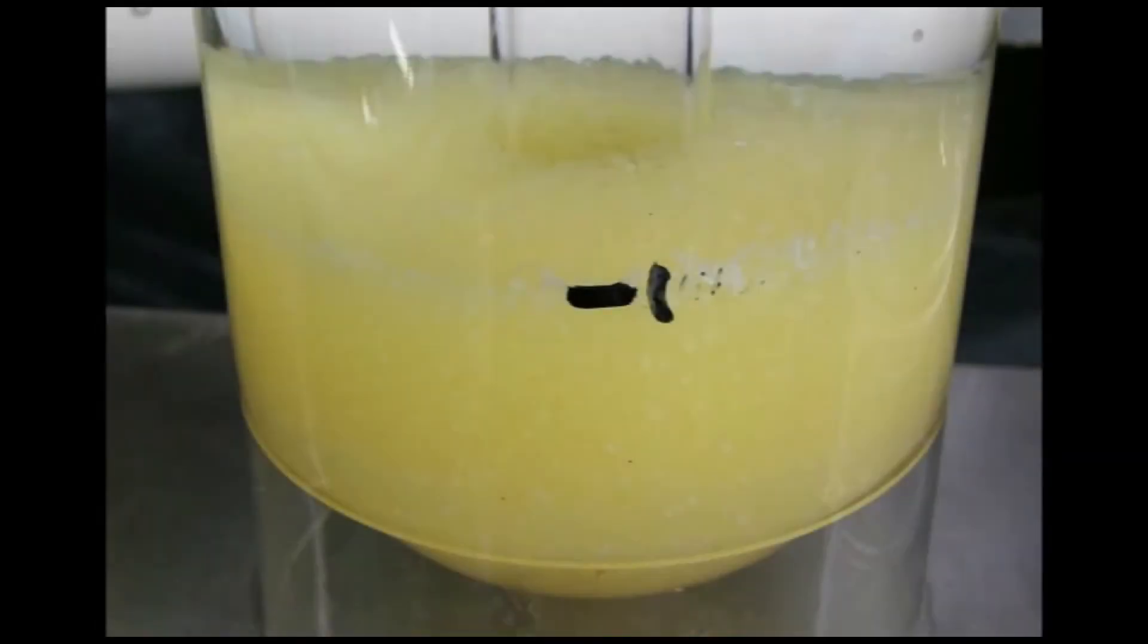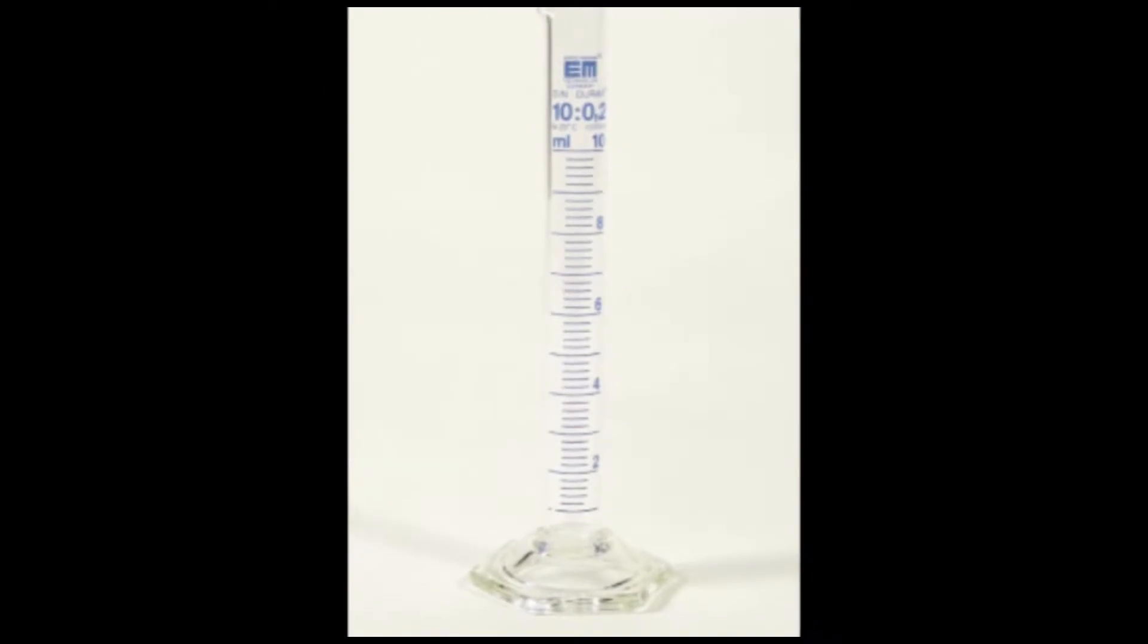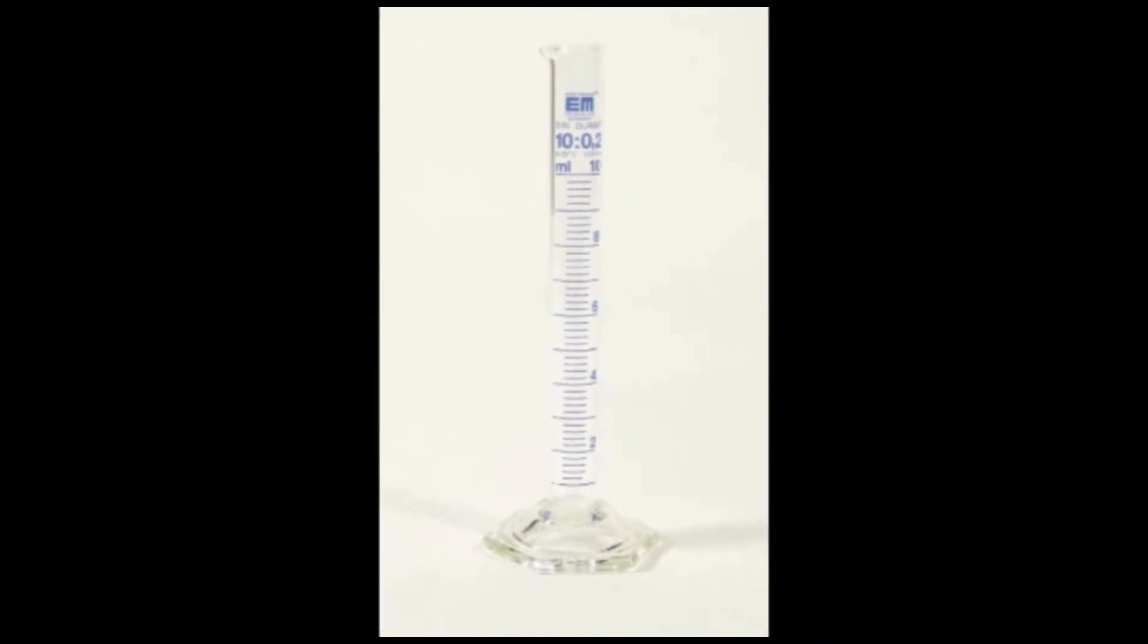Now that the eggs are safely incubating, total egg numbers can be determined. A common methodology used is volumetric displacement, using the total volume of eggs discussed earlier. First, obtain a small graduated cylinder. A 10-milliliter cylinder works well.